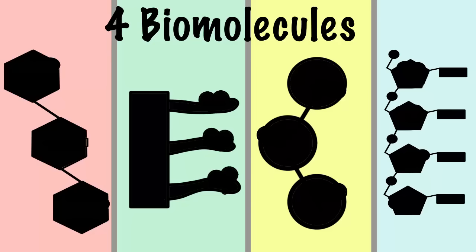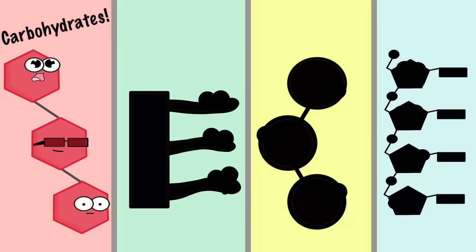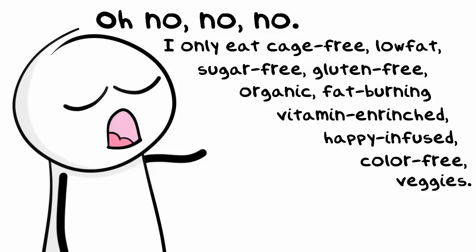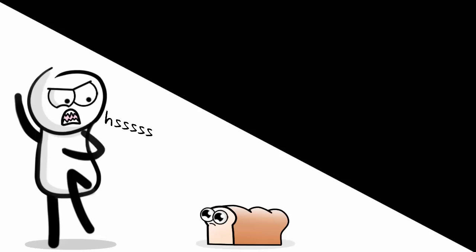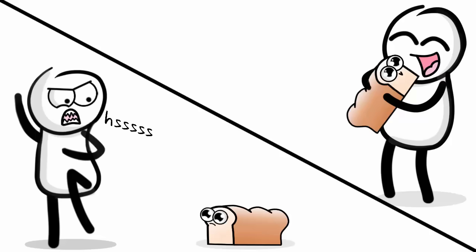So let's introduce the four biomolecules now and talk a little bit about their functions. We'll start with carbohydrates — carbs. Carbs are something that you've probably heard a lot about when people are talking about diets. They try to go low-carb, or maybe they want a lot of carbs. Diets always come and go.